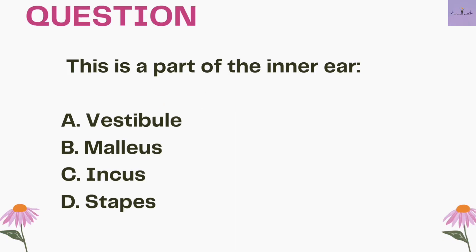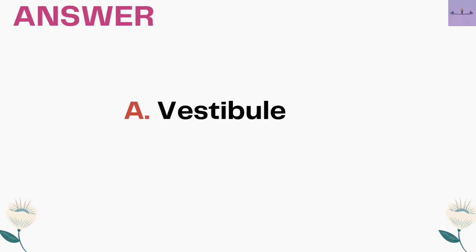Next question: this is the part of the inner ear — A. Vestibule, B. Malleus, C. Incus, D. Stapes. Malleus, Incus, and Stapes are the ossicles, and they belong to the middle ear. So the part of the inner ear is option A, Vestibule.